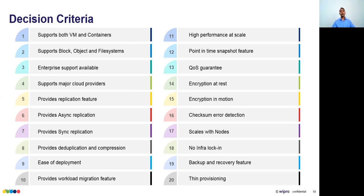Fifteenth: scalability — how does it scale? If you start with three storage nodes giving 150 TB and run out, can you simply add one more node and have it handle rebalancing while maintaining the same performance? Sixteenth: infrastructure or hardware lock-in — some storage solutions work only with specific hardware, which restricts your choices.